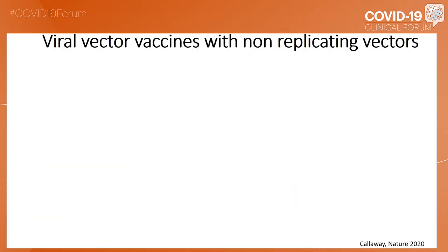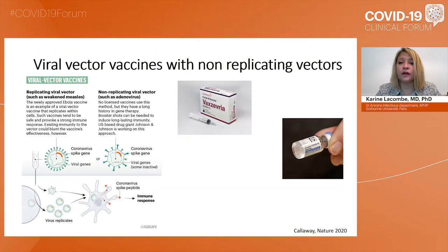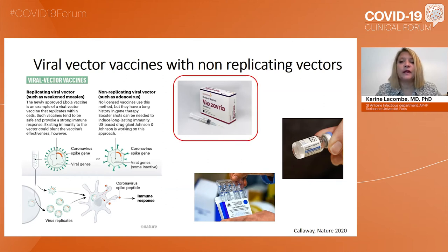Regarding the viral vector vaccines with non-replicating vectors: only three of them are currently on the market. One is approved in Europe — that's Vaxzevria. One is the Janssen vaccine, which is not currently used for a reason I will explain shortly. And the Sputnik V from Russia is also a viral vector vaccine with non-replicating vectors, but I won't discuss its safety as it is not commercialized in Europe. My focus will be on Vaxzevria, as it has been in use for a few months now.